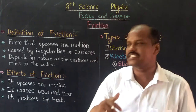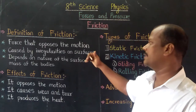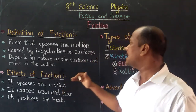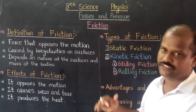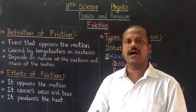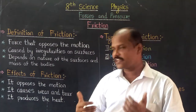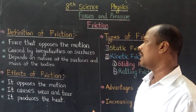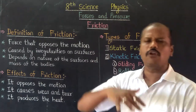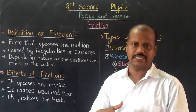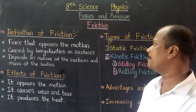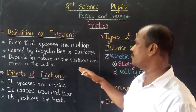The friction depends on the surface. The nature of the surfaces means smooth surface or rough surface. And the mass of the body, and the area of the contact surface.